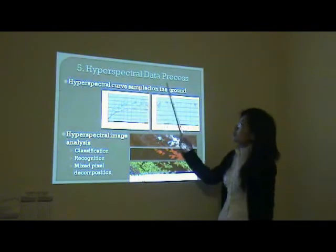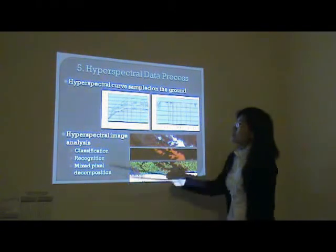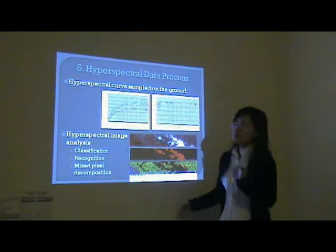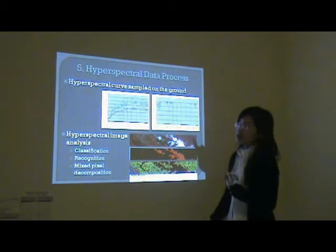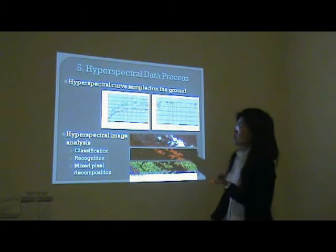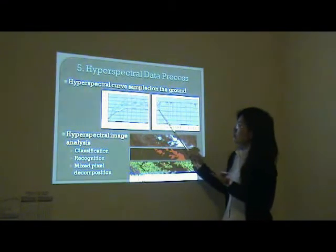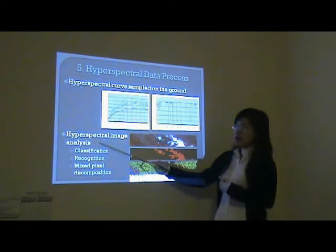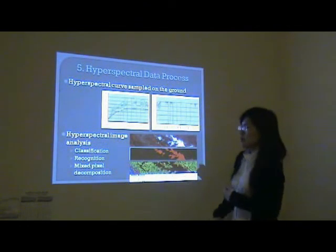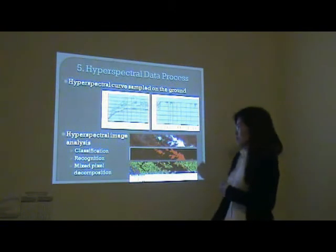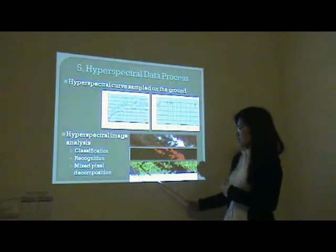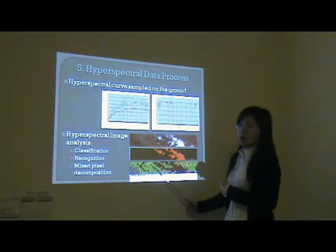The fifth part is hyperspectral data processing. First, I process hyperspectral curve measurements on the ground, including pre-processing and feature extraction. For example, we can extract spectral features after continuum removal. Second, I analyze hyperspectral images, including classification, segmentation, and mixed-pixel decomposition. For example, recognizing the barren/mining sites in Hyperion data, and classifying the vegetation by their red-edge features.